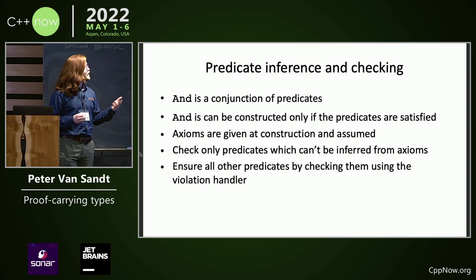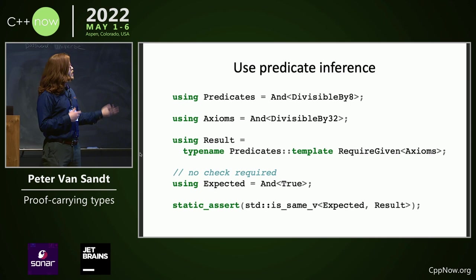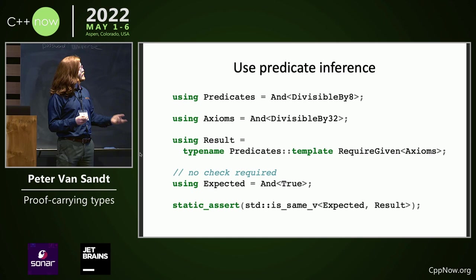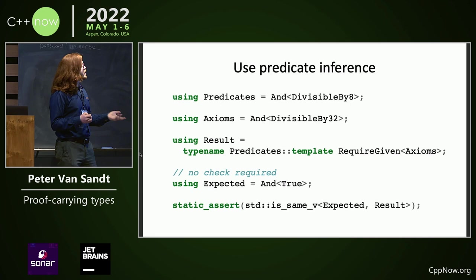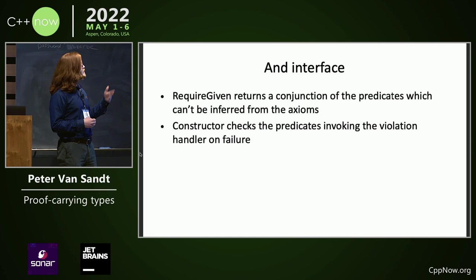Here we can see the inference and propagation happening where we specify that what we want is that something is divisible by 8. What we have is that it's divisible by 32. So we know that given our predicates — what it requires — and given our axioms, it is true.